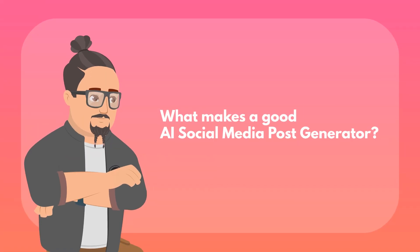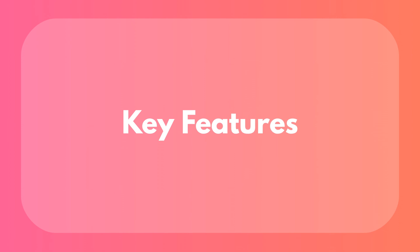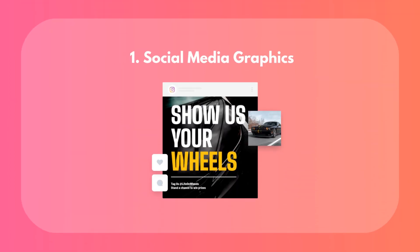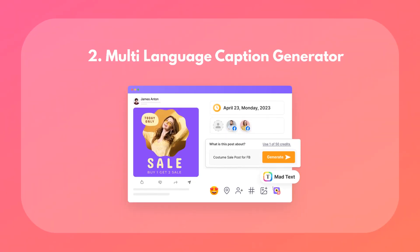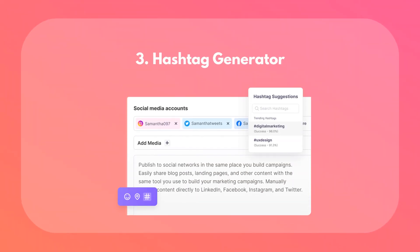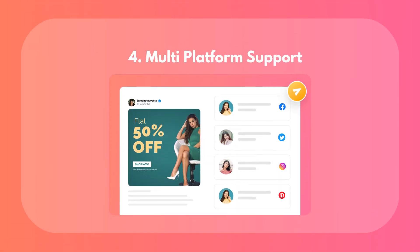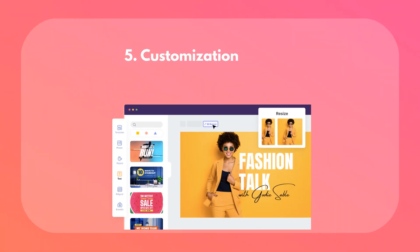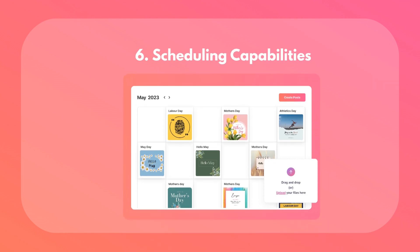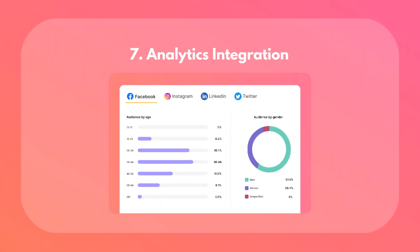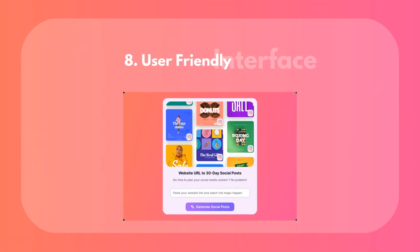Before we dive into the tools, let's talk about what makes a good AI social media post generator. You want to look for these key features: social media graphics, multi-language caption generator, hashtag generator, multi-platform support, customization options, scheduling capabilities, analytics integration, and a user-friendly interface.